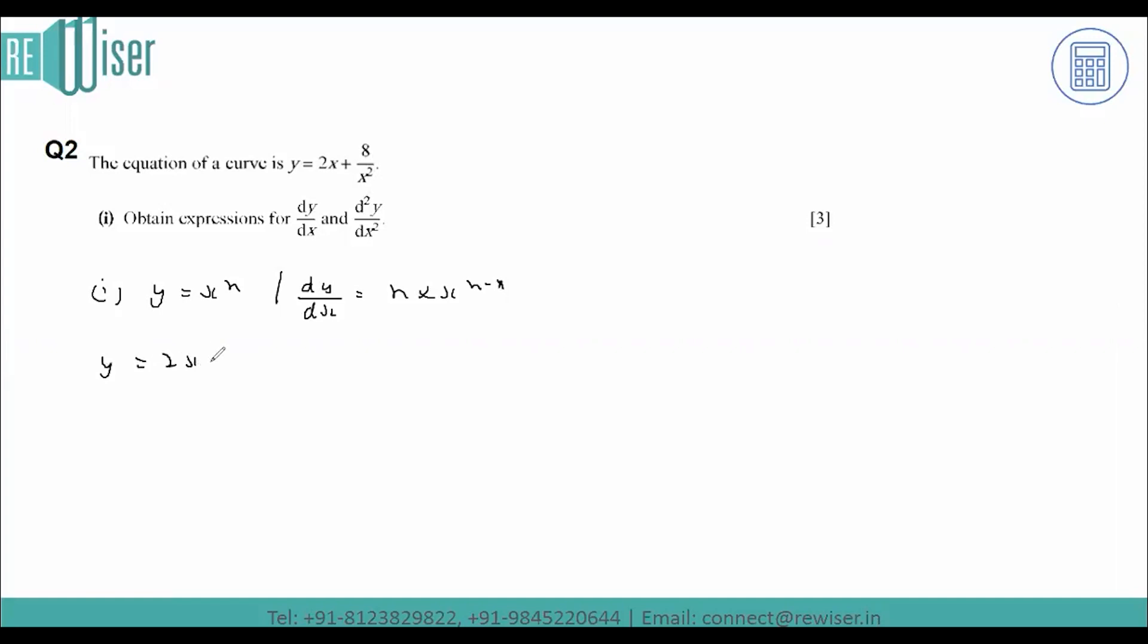We can write y equals 2x plus 8 over x squared, which can be written as 2x plus 8 times x to the power minus 2.